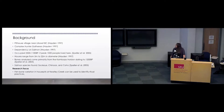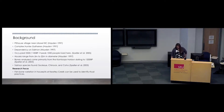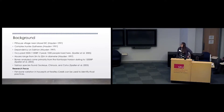Some background on the site: Keighley Creek is a pit house village near Lillouette, BC, comprised of a complex hunter-gatherer group. It was occupied between 3,500 and 1,100 BP seasonally. The bones that I'm analyzing are from the Kamloops horizon that date back to about 1200 BC. The salmon species typically found here is chinook, coho, and sockeye salmon.